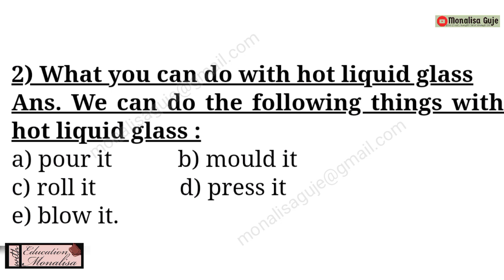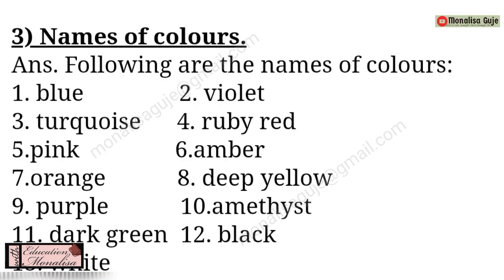All these things we can do with hot liquid glass to give it a proper shape as we want, and then the articles which we see around are ready for us. The third list they are asking is the names of the colors mentioned in the passage: blue, violet, Turkish, ruby red, pink, amber, orange, deep yellow, purple, amethyst, dark green, black and white. After writing each color, take that color crayon and make a small circle in front of it, so you understand the colors and it will look very pretty and beautiful.